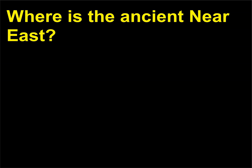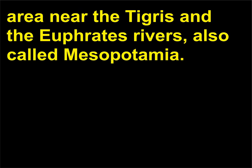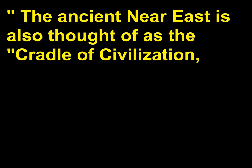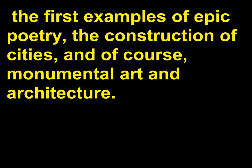The ancient Near East is a term used by art historians to refer to the area near the Tigris and the Euphrates rivers, also called Mesopotamia — a Greek word that means the land between two rivers. The ancient Near East is also thought of as the cradle of civilization, as it is here that urban society developed for the first time, with it came the invention of writing and laws, the first examples of epic poetry, the construction of cities, and of course monumental art and architecture.